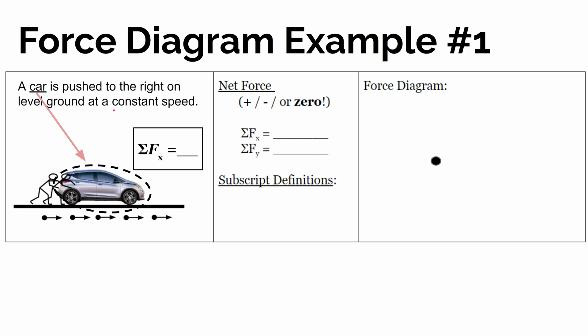It says it's moving at a constant speed. If we know something about the motion of the object, we should be able to make an inference about what's true of the sum of the forces on that object. So let's go back to: how is the motion of an object related to the forces it feels?